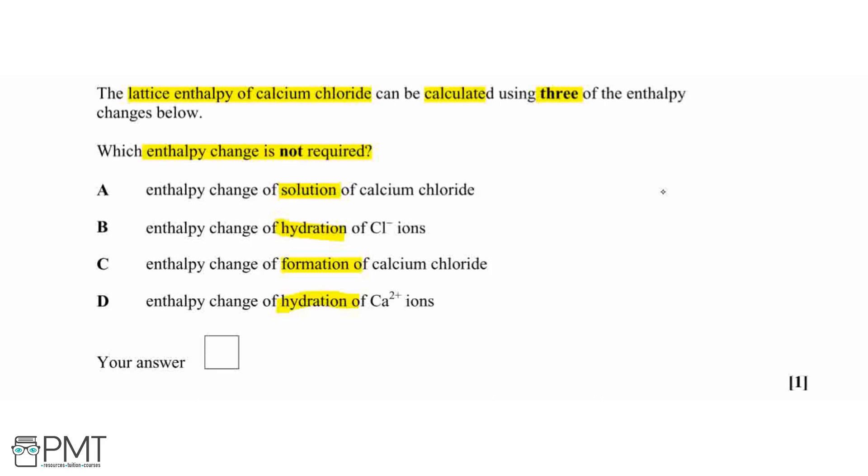So for our lattice enthalpy, that's forming our solid ionic compound from the gaseous ions. So I'll put our solid calcium chloride here, and then the gaseous ions at the top. And this here is going to be our lattice enthalpy, and that's always exothermic, so I've drawn the downwards arrow.